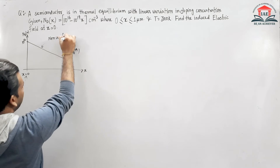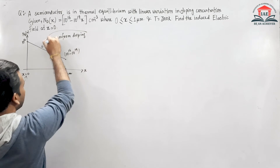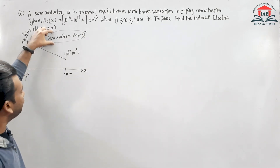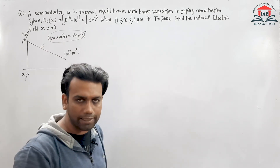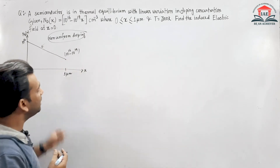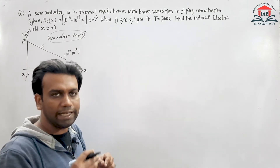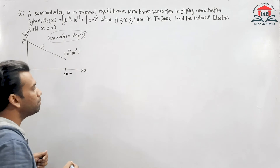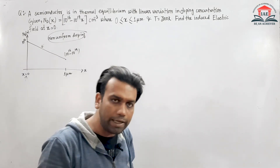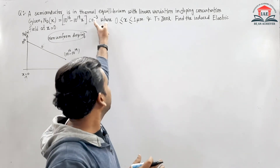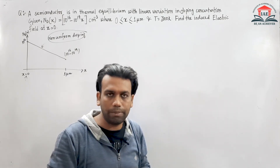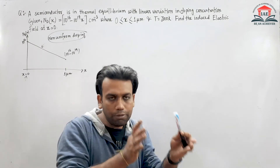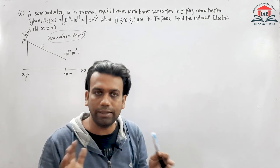In the non-uniform doping concept, an induced electric field always occurs. In non-uniform doping, there is both drift motion and diffusion motion of carriers. Since it is donor (Nd) doping, we consider only electrons. The semiconductor is in thermal equilibrium, so the net current must be zero — meaning the drift component equals the diffusion component.